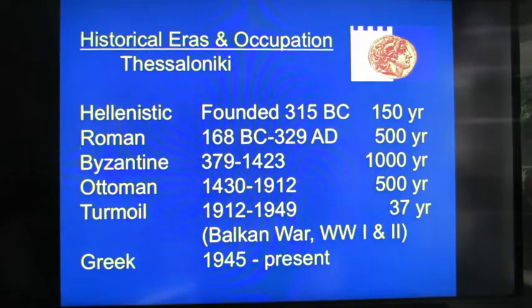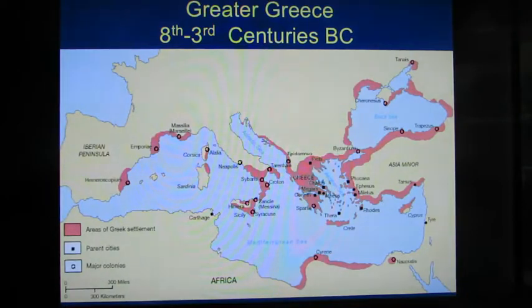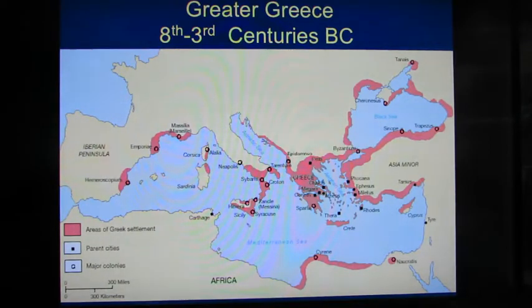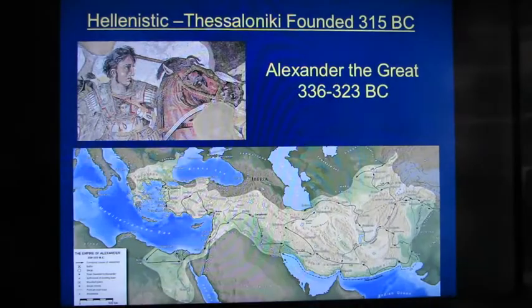This gives you an idea of early Greece in the eighth to third centuries BC. Greece colonized major areas of the Mediterranean, all the way from the Iberian Peninsula into the Black Sea and down towards Egypt, so it had a very expansive set of colonies around the Mediterranean region. The Hellenistic area of course encompassed the time that Alexander the Great was in the Thessaloniki area in Macedonia.